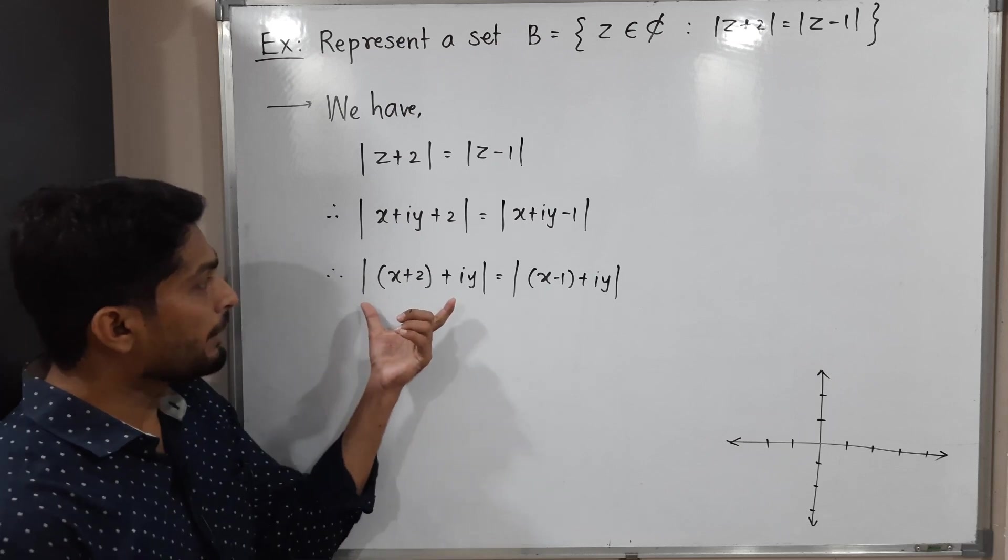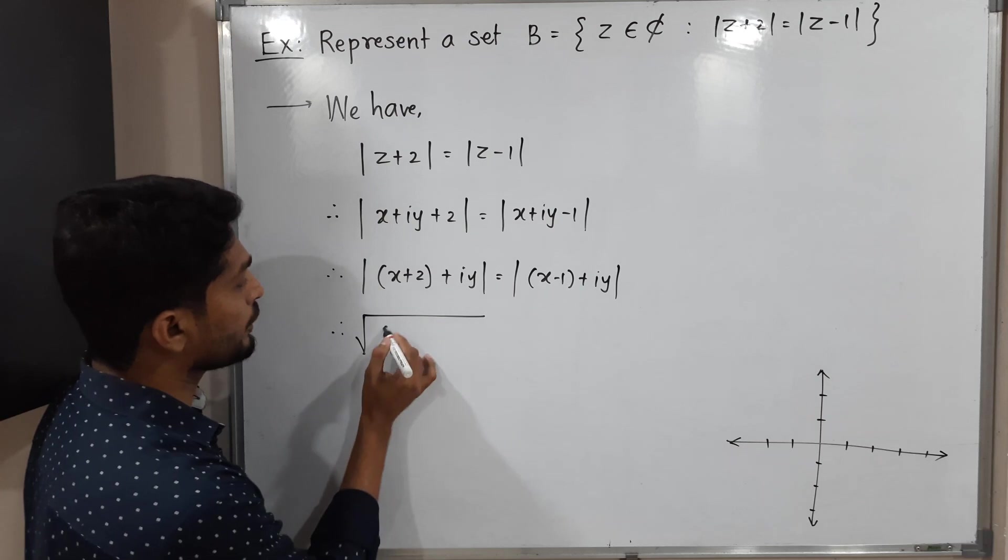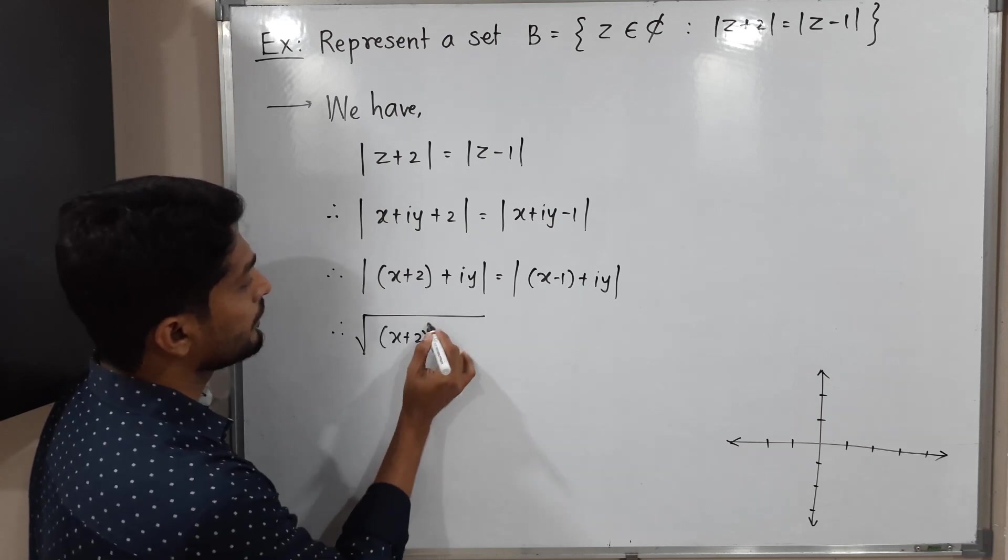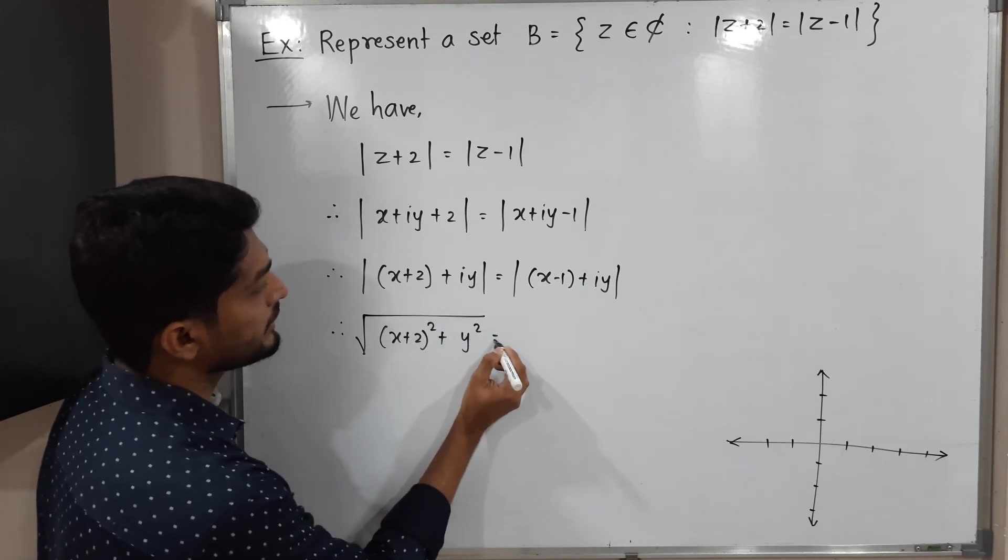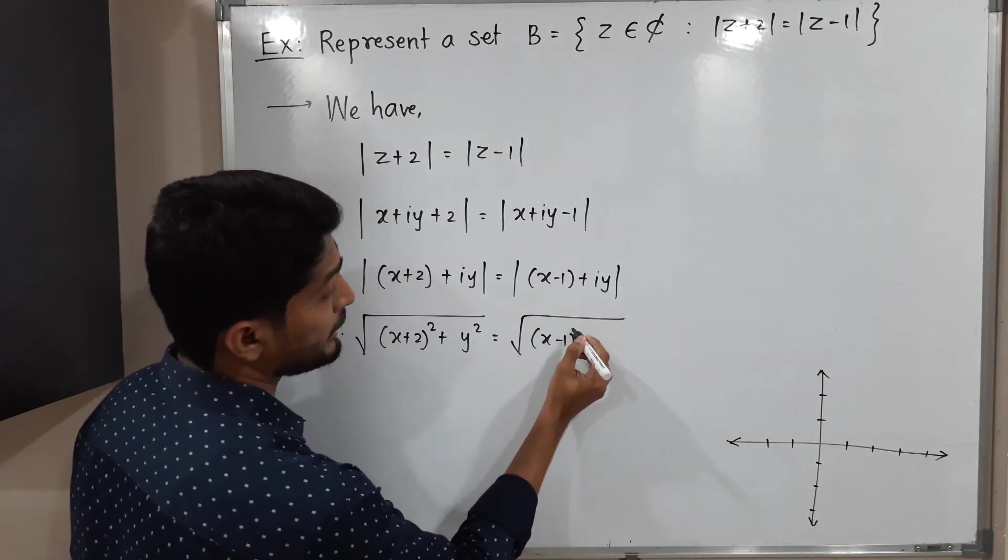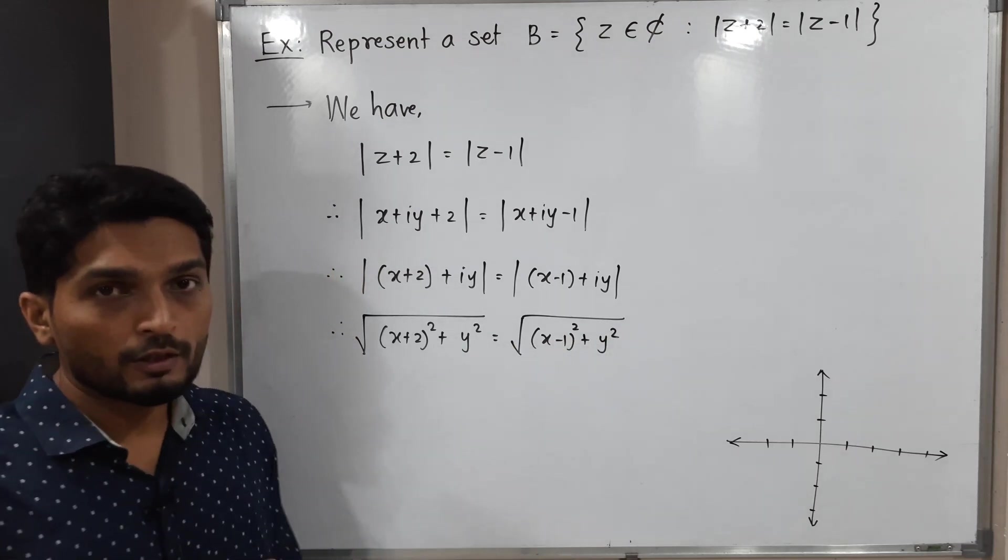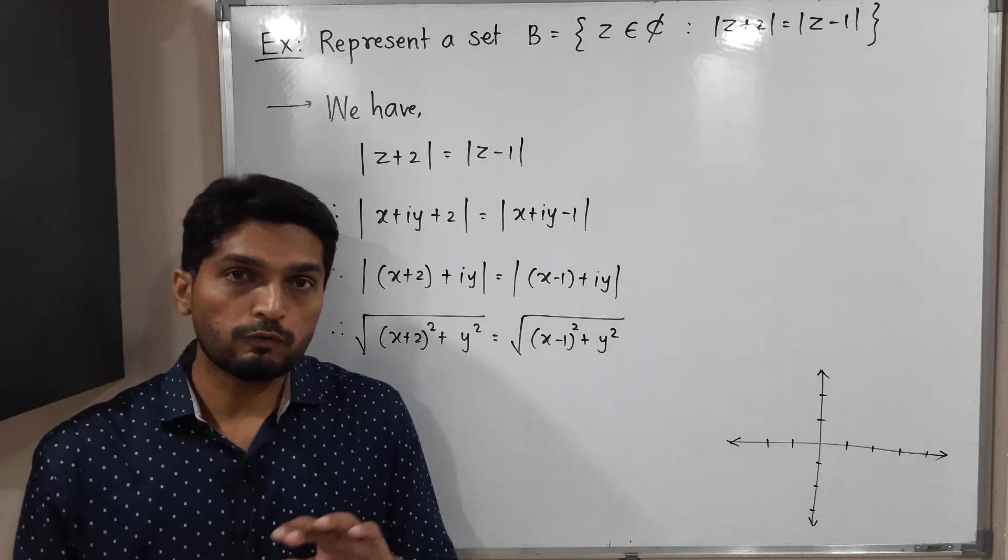So I am applying the definition of mod. So the definition of mod says square root of square of real part plus square of imaginary part. Same definition I will apply here. So x real x minus 1 square, square of real part, square of imaginary part to remove square root of both sides.